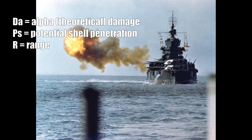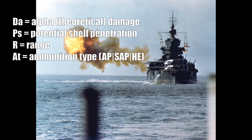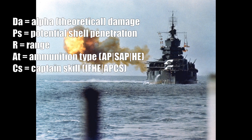The next thing to consider is ammunition type. There are currently three ammunition types in the game: armor piercing, high explosive, and semi-armor piercing. Semi-armor piercing currently only exists for one Italian premium ship. Armor piercing has more penetration and does more damage but has a different mechanic for dealing damage. High explosive has less penetration and usually less damage but has a chance of setting fires. The last factor is captain skills — there are two that affect shell penetration: the Armor Piercing Capped Shell skill and the Inertia Fuse High Explosive skill.